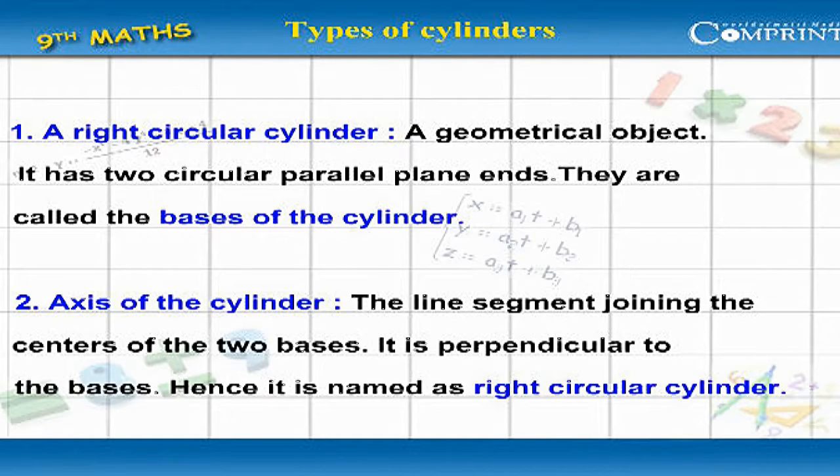The axis of the cylinder is the line segment joining the centers of the two bases. It is perpendicular to the bases, hence it is named as right circular cylinder.